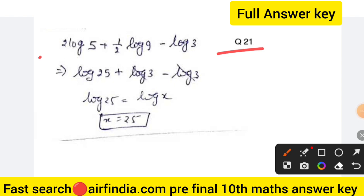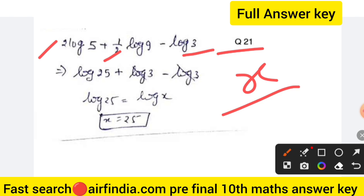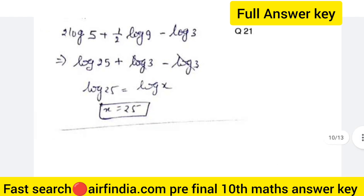Question 21: given 2 log 5 plus 1/2 log 9 minus log 3, find the value of x. This simplifies to log 25 plus log 3 minus log 3, which equals log 25. So log 25 equals log x, meaning x equals 25. This is your right answer.